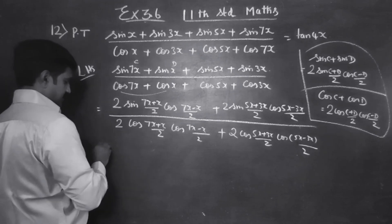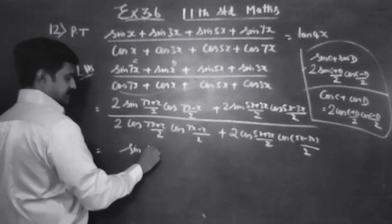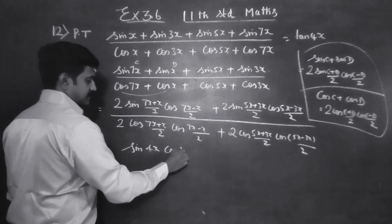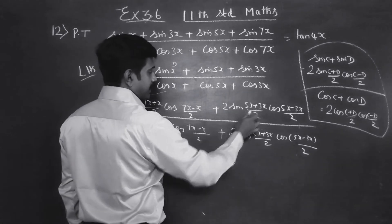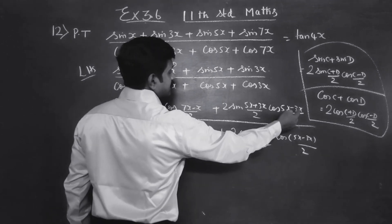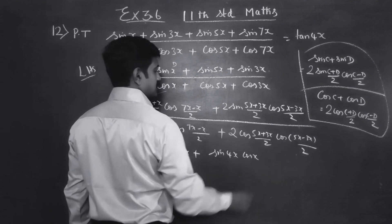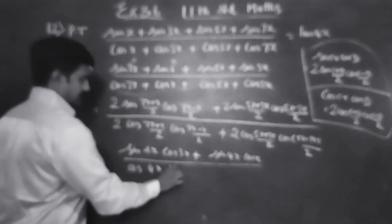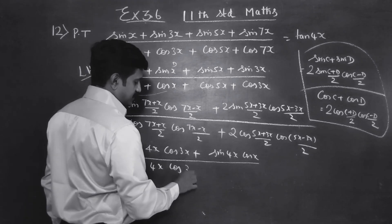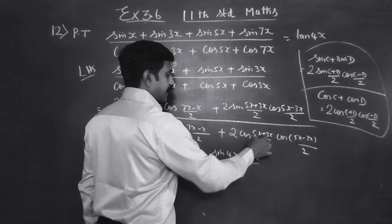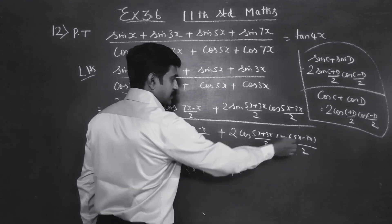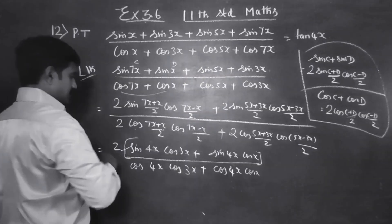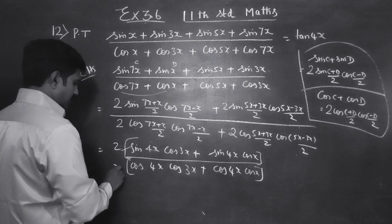So we get sin 4x, cos (7x minus x) gives 6x, 6 by 2 is 3x, so cos 3x. Then 5x minus x is 2x, 2x by 2 is x, so cos x. In the denominator: cos 4x, cos 3x, and cos x. The 2 common in numerator and 2 common in denominator cancel out.